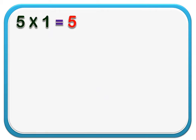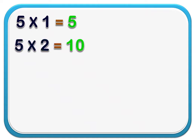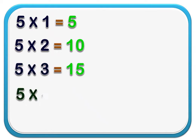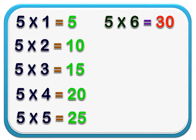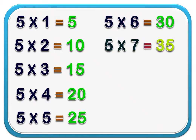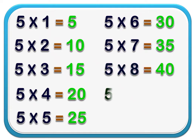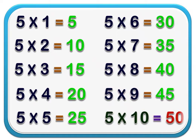5 1's are 5. 5 2's are 10. 5 3's are 15. 5 4's are 20. 5 5's are 25. 5 6's are 30. 5 7's are 35. 5 8's are 40. 5 9's are 45. 5 10's are 50.